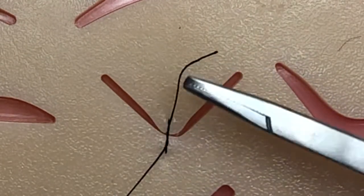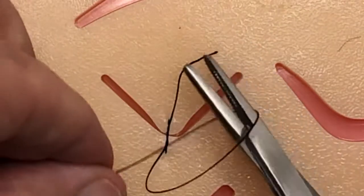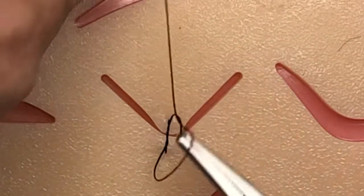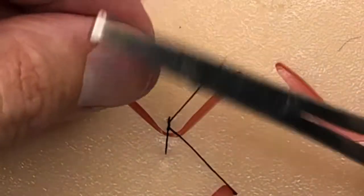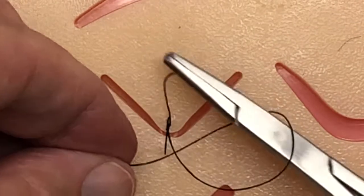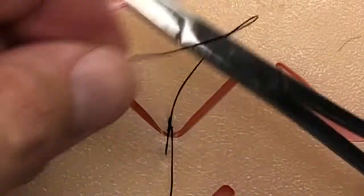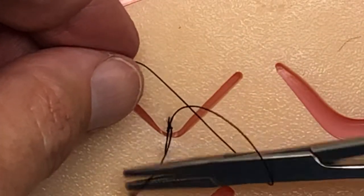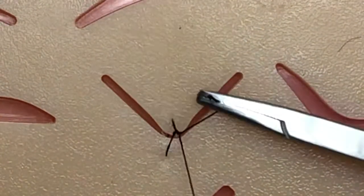And then you come back in, you grab the needle—I'm sorry, the thread—and you're going in opposite directions each time. Opposite directions, three, four, or five throws. All right, so that's a good way to secure that Y-shaped flap down whenever you're working with one of these types of lacerations.